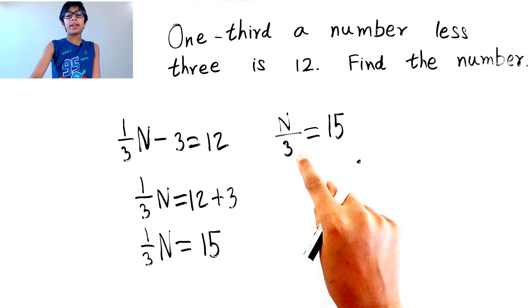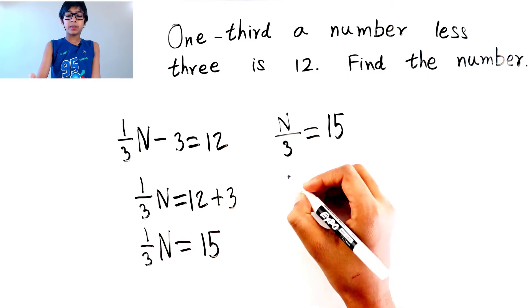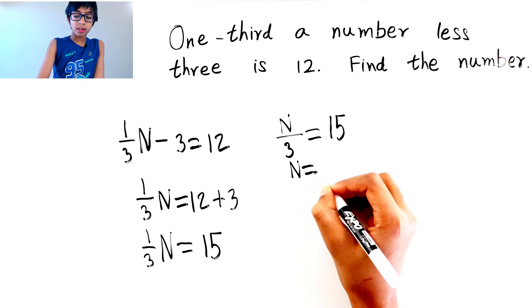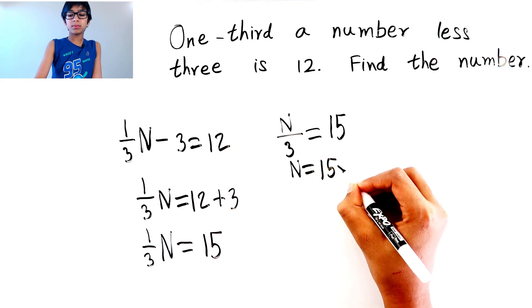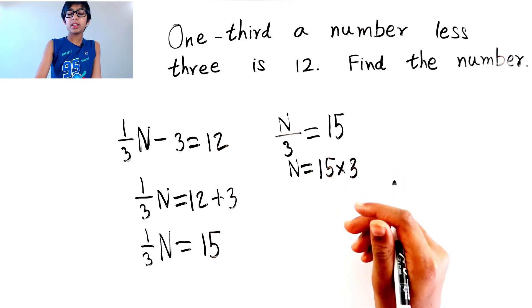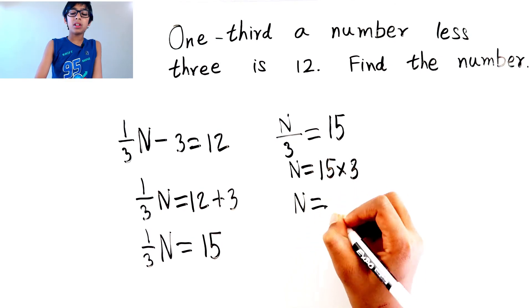Let's take the divided by 3 over here. Then it would become a times 3. So n equals 15 times 3. 15 times 3 is 45. So n equals 45.